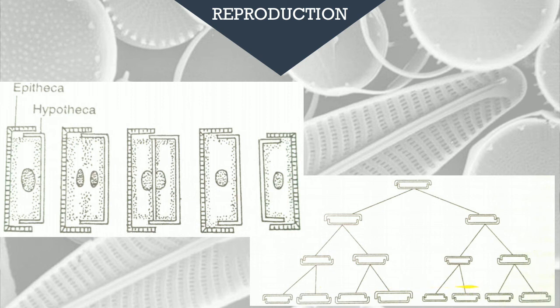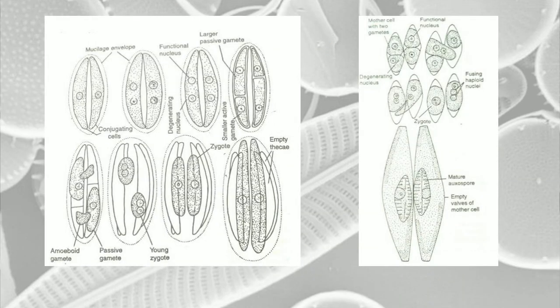This size reduction can continue only until a minimum size is reached. Beyond that minimum size, when physiological processes can no longer be supported, the organism must find another way to restore its original size — and that is through sexual reproduction. When the minimum size is reached, those tiny cells enter into sexual reproduction.